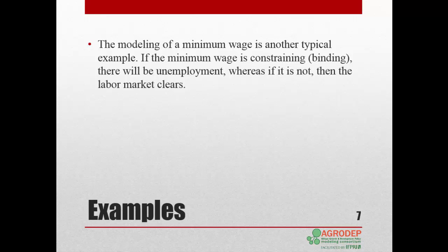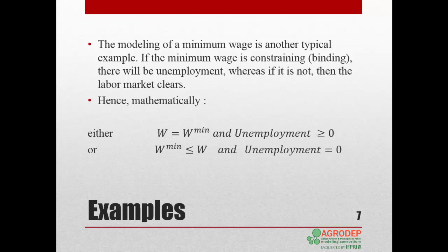Another example of MCP is the imposition of a minimum wage. If the minimum wage is binding, the labor market equilibrium will generate an excess supply of labor or unemployment. If the minimum wage is not binding, the labor market clears and unemployment is zero. In mathematical terms: when the labor market clears at a wage rate lower than the minimum wage, the wage rate must be set to the minimum wage and unemployment is positive or zero; when the labor market clears at a wage higher than the minimum wage, the constraint is not binding and unemployment equals zero.